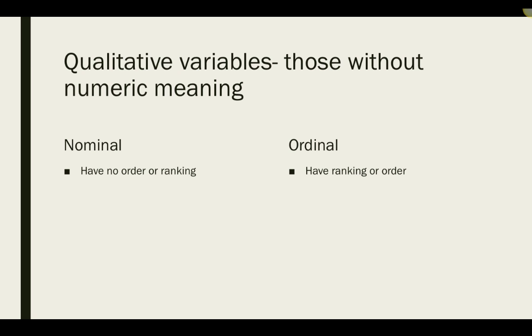Qualitative variables, or those without numeric meaning, can only be nominal or ordinal. Nominal data is set up so it has no order or ranking, while ordinal data has an implied order or ranking.